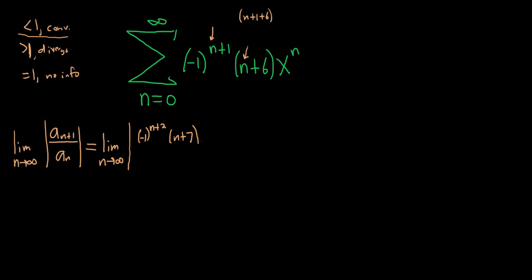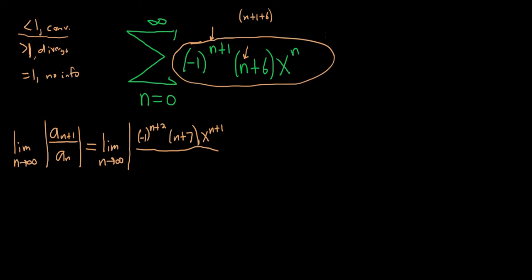And then we have x to the n plus 1. Then we're supposed to divide by a sub n, which is already what we have up here — this whole piece here is your a sub n. That will be negative 1 to the n plus 1, then we have n plus 6, and then we have x to the n.